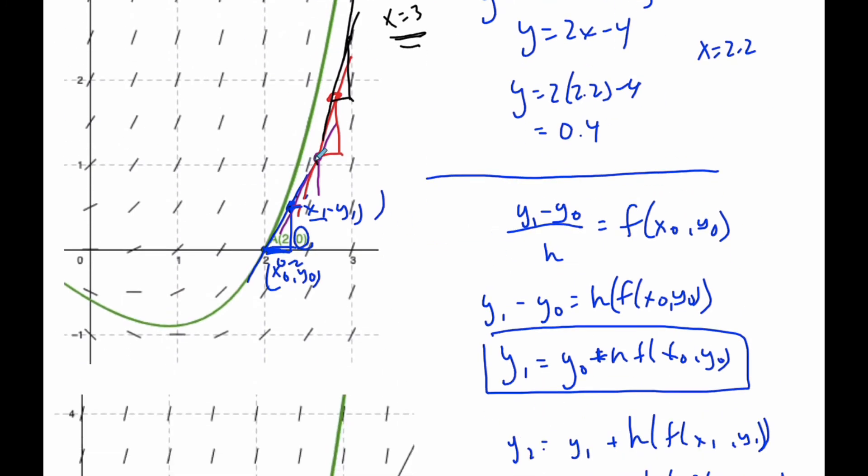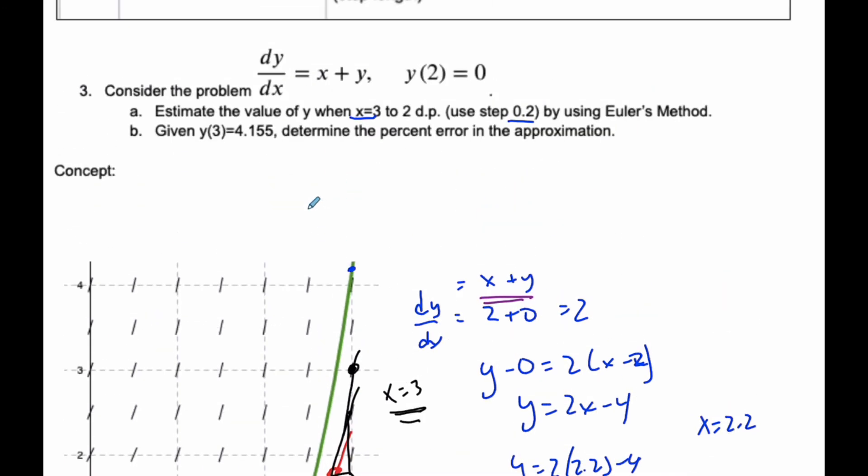It uses the idea that we know the slope at any given point on this entire Cartesian coordinate plane, which is the premise of a slope field. And we can use it to find a really good approximation of the true value. That's the concept behind Euler's method.